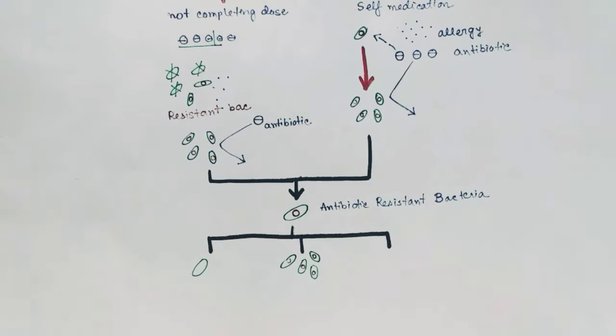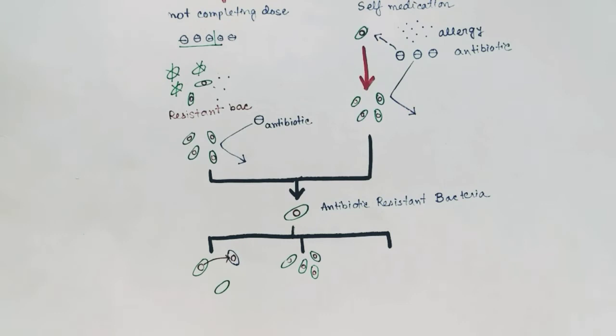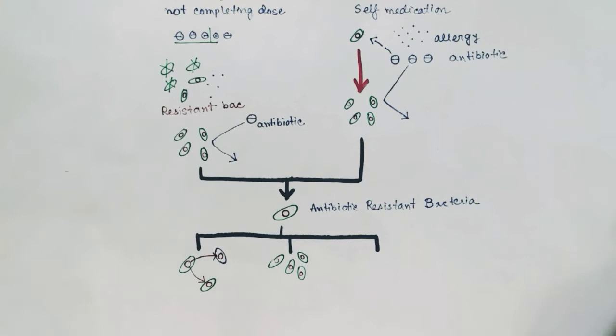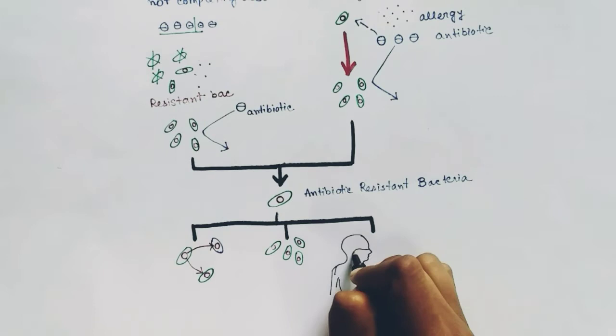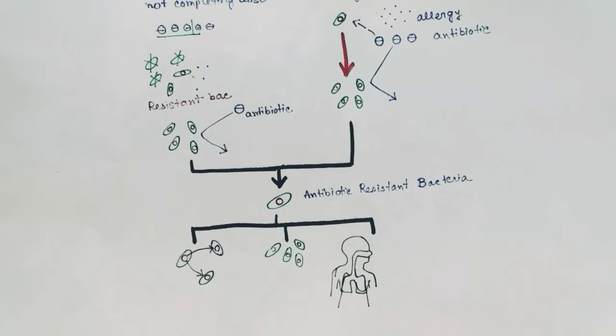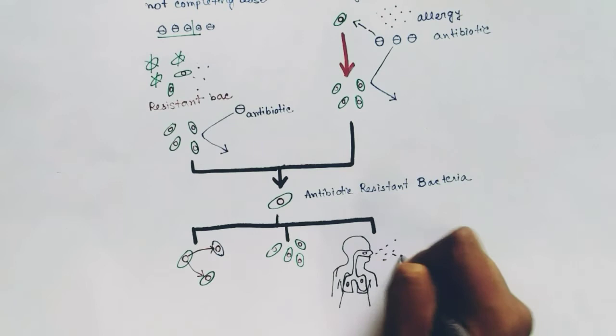The second thing that can happen is that antibiotic-resistant bacteria can transfer the resistant gene to other bacteria — to the same species or to other bacteria of its kind. Or this antibiotic-resistant bacteria can also transfer from one human to another. Suppose one human has antibiotic-resistant TB and when he coughs, the TB bacteria with its droplets goes to another human being.